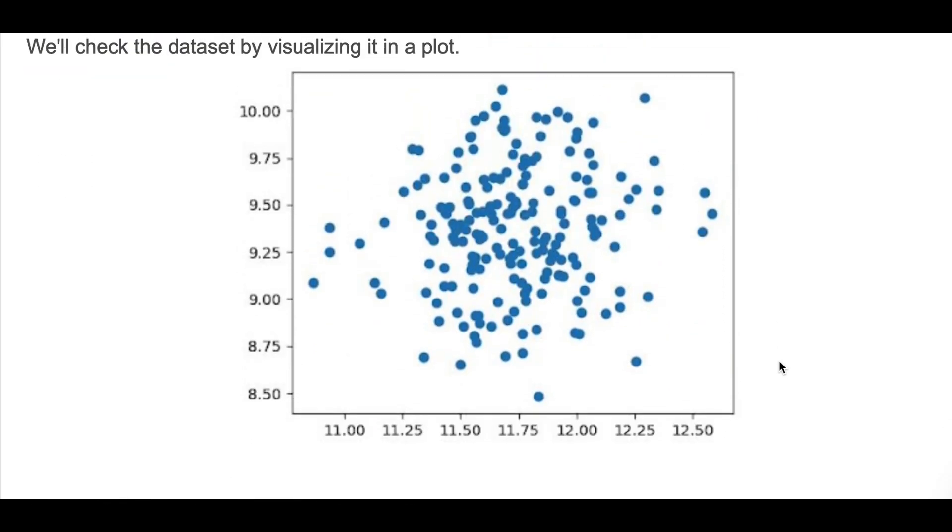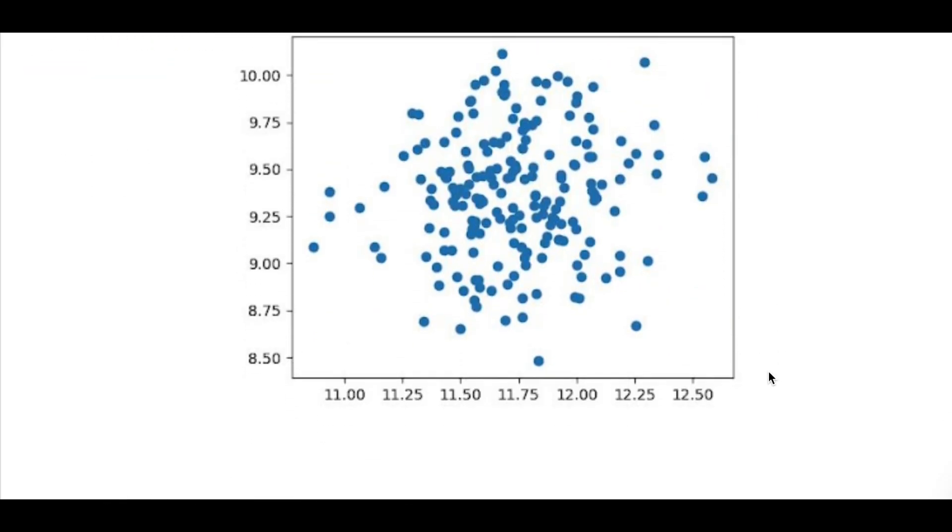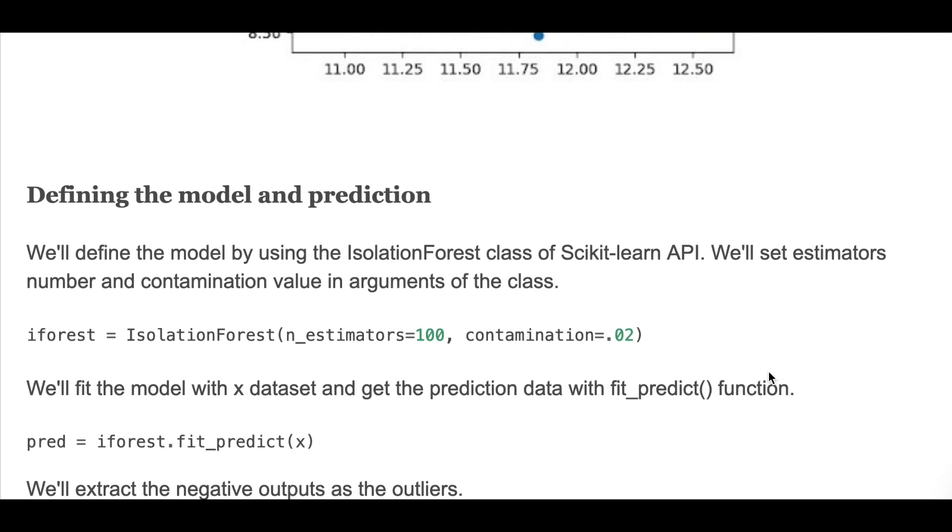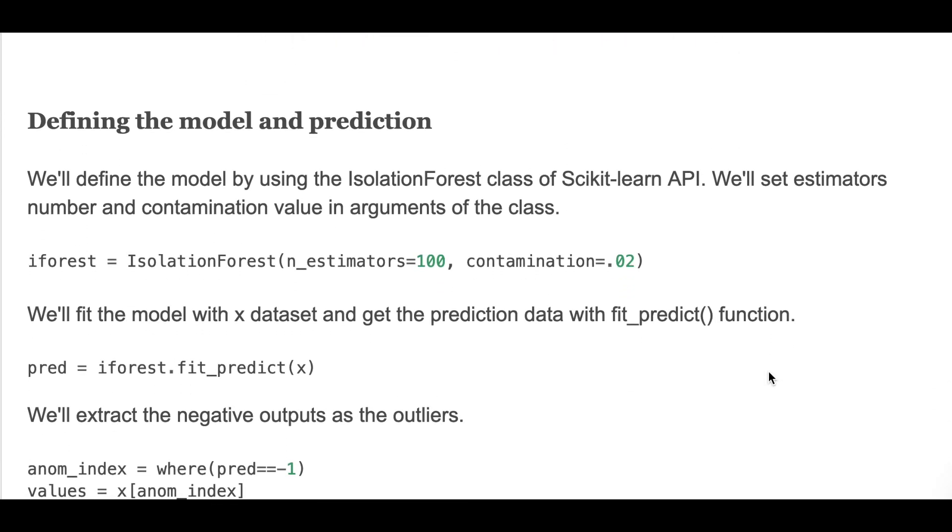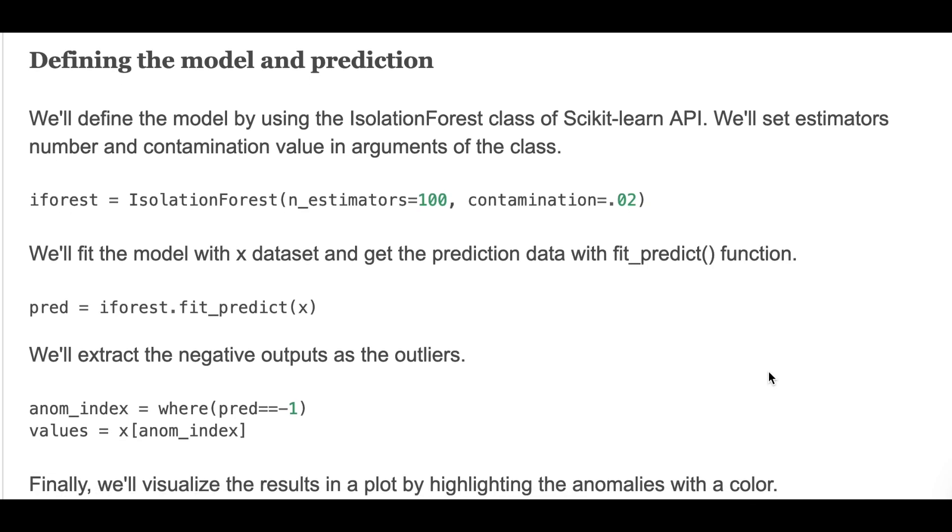Next we'll define the model and do prediction. We'll define the model by using the IsolationForest class of scikit-learn API. We'll set the estimators number and the contamination value in arguments of the class. Here we define the estimator's number and contamination value.